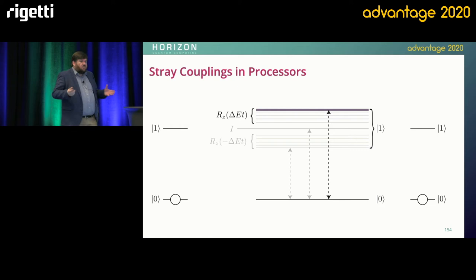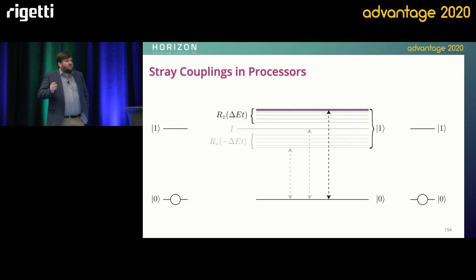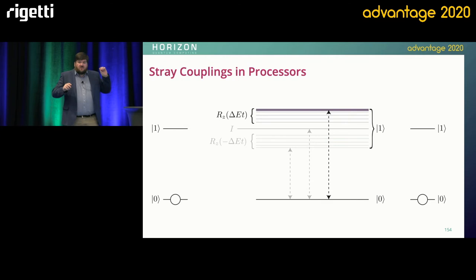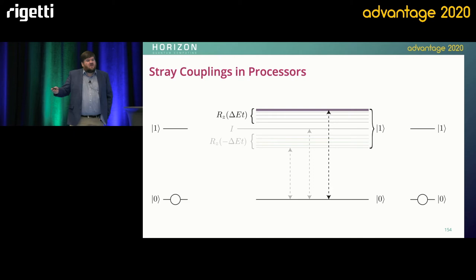The particular thing I want to talk about is stray couplings. In a quantum processor, you have a number of qubits and these qubits talk to each other — and sometimes they talk to each other when you don't expect them to. There's some residual coupling between qubits in the device, and the effect of that is that the frequency of a particular qubit is shifted slightly depending on the state of other qubits to which it's coupled. What you're seeing when you affect the other qubits is coupling between physical qubits in the device.